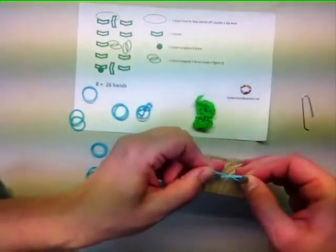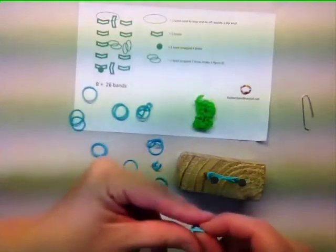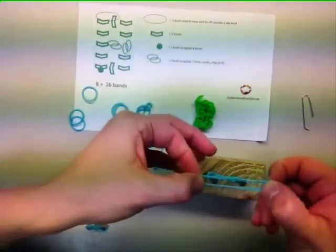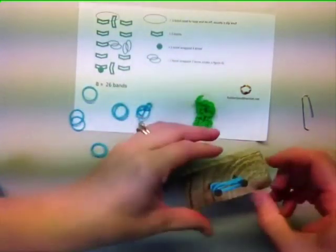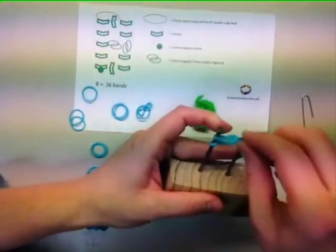So we will take two bands and place them on our loom in a figure eight. Then we are going to take two more bands and put them on the nails. Next we'll weave. You take the bottom band and bring it over the top band on both sides.